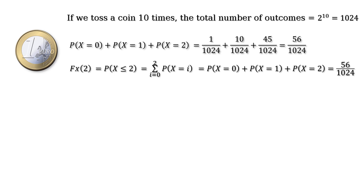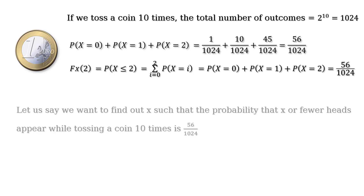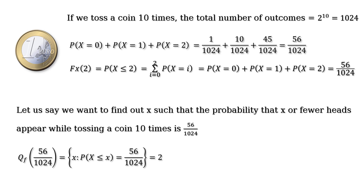In our example, let's find small x such that the probability that x or fewer heads appear while tossing a coin 10 times is 56/1024. We can find x using the percent point function. We found that the probability that two or fewer heads appear is 56/1024, so Q(56/1024) = x such that P(X ≤ x) = 56/1024, which equals 2.